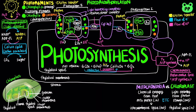This time around, plastocyanin serves as the electron donor to replace the electron removed from P700. A0 then transfers electrons to phylloquinone, abbreviated as A1, then through three iron-sulfur centers in Photosystem I to ferredoxin, abbreviated as FD.